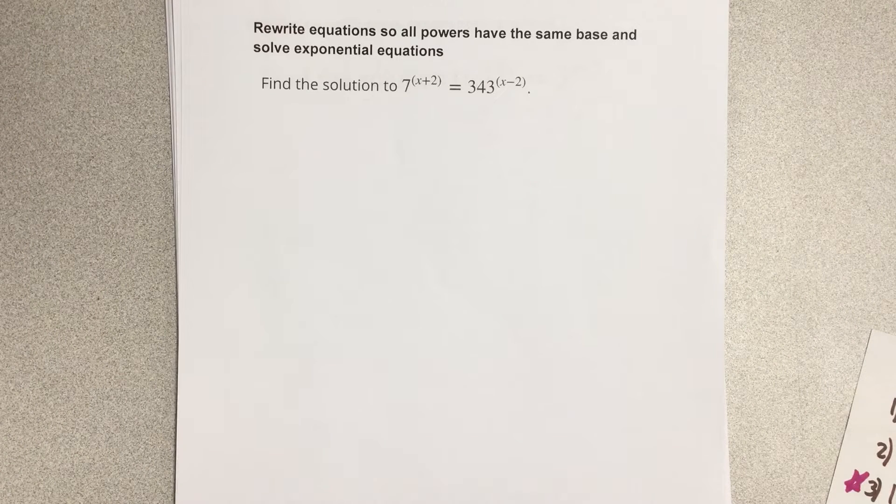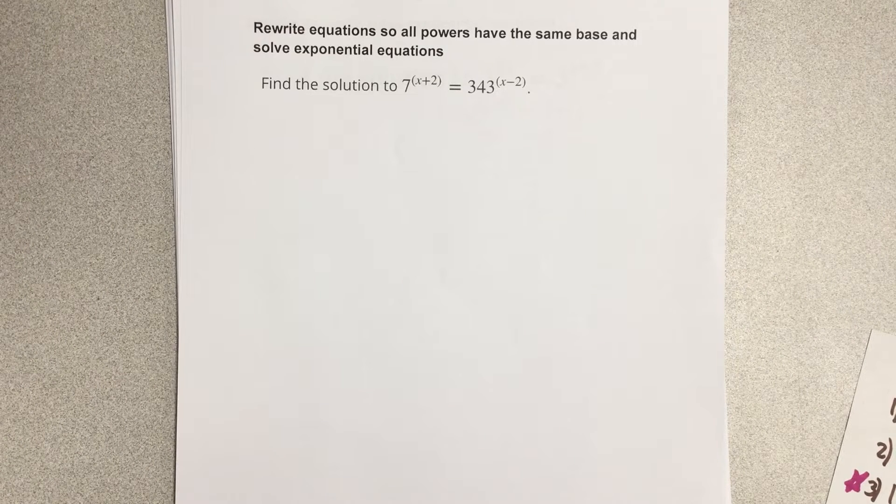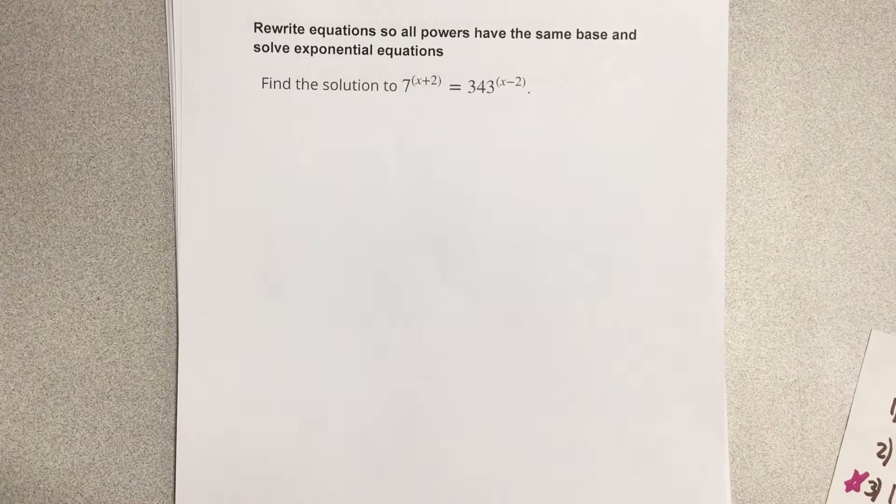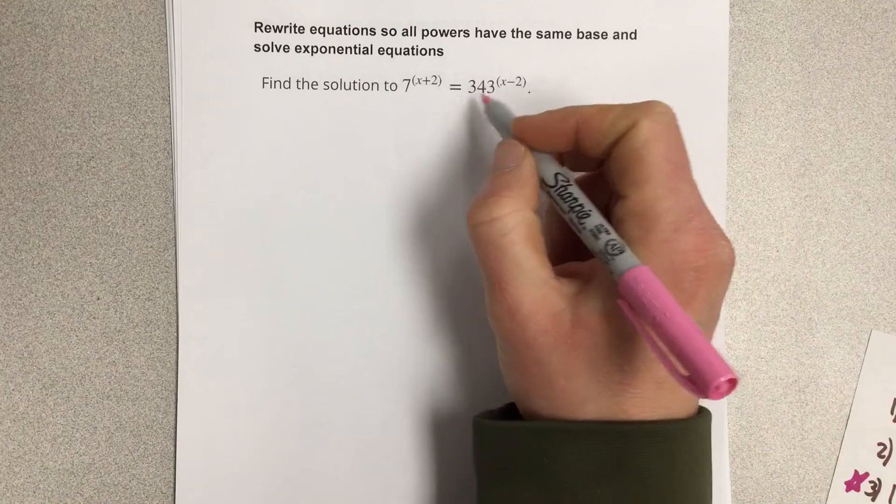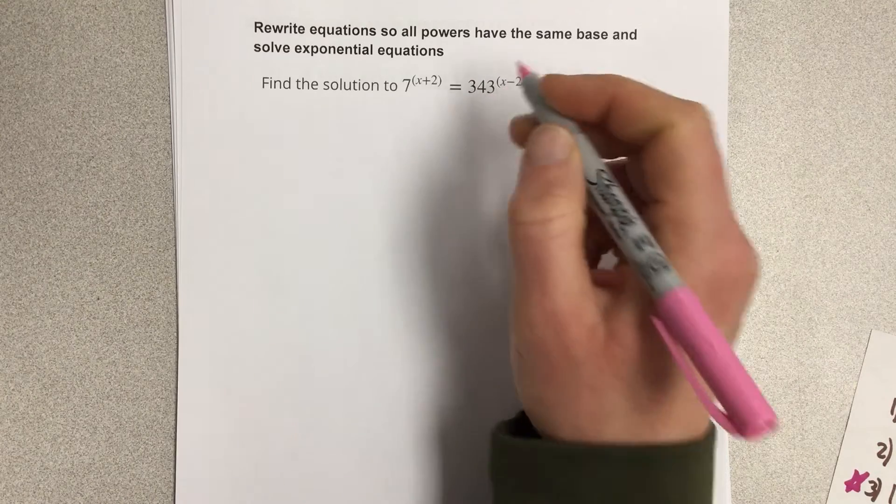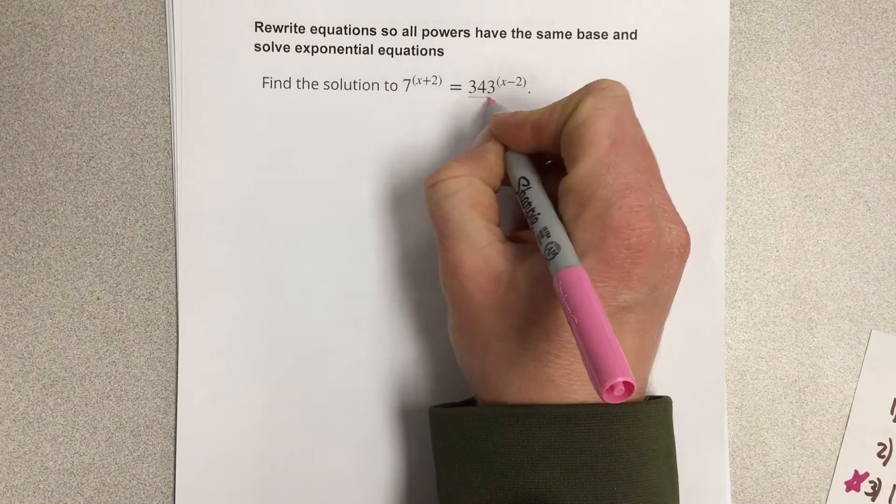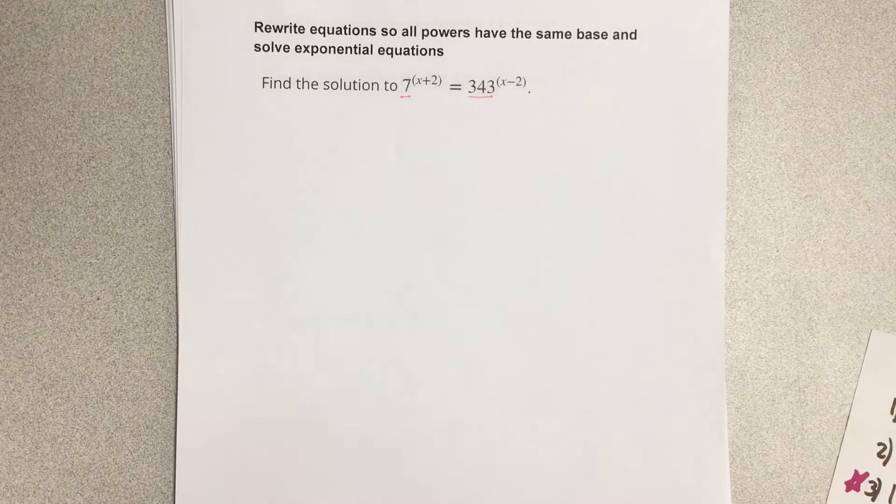In this video we're going to rewrite equations so all powers have the same base and solve exponential equations. You'll notice that they say find the solution to 7^(x+2) = 343^(x-2), and they want us to take these bases which are different and try and make them the same.